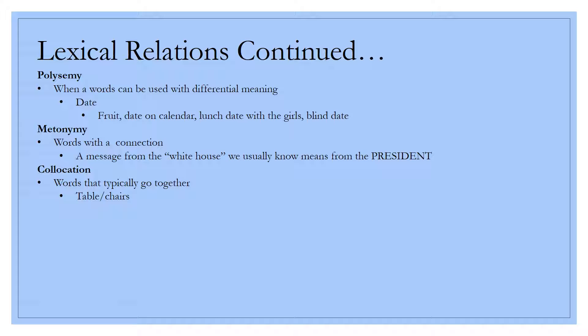Then you have metonymy, which are words with a connection. If you get a brief interruption on your TV set because there's going to be a message from the White House, you automatically know in the back of your mind that it's a presidential speech or some kind of message from our president, not necessarily the White House. We all know that houses cannot speak. And then you have collocation, which are words that typically are always paired up together. You can have table and chairs, bed and sheets, couch and cushions, things along those lines. You typically know they go together. You can have one without the other, but it's odd to have one without the other.